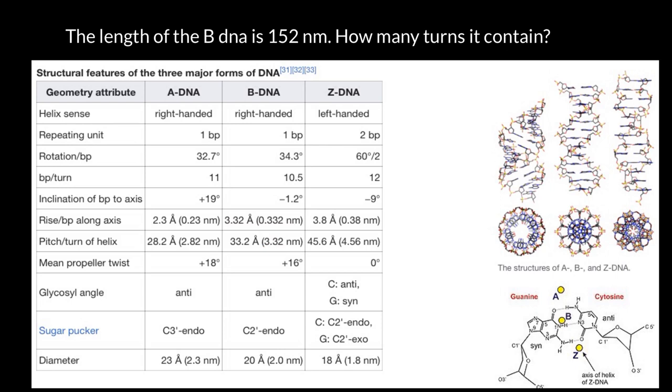Per one full turn, we are given this information that one full turn is 3.32 nanometers. How we got this number? We just moved the decimal point one place to the right. And here goes a mistake because we have 10.5, so we have to multiply this number not just by 10 but by 10.5.